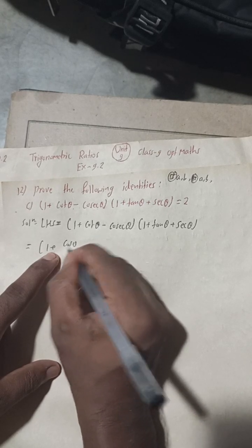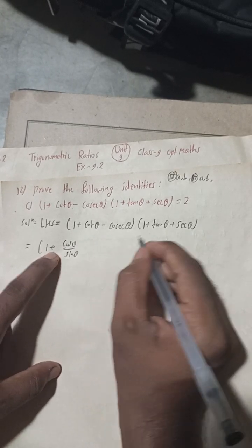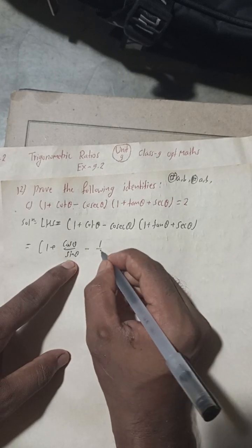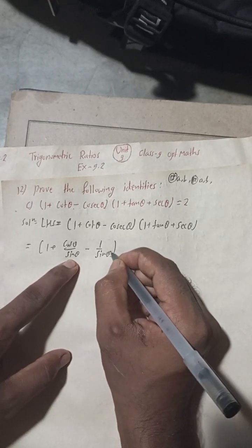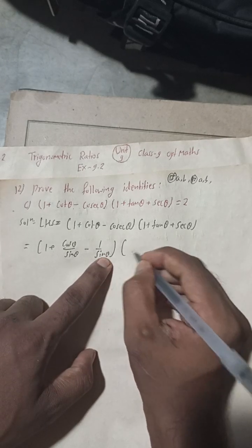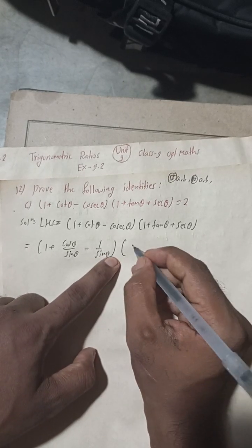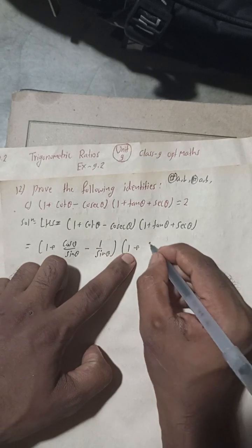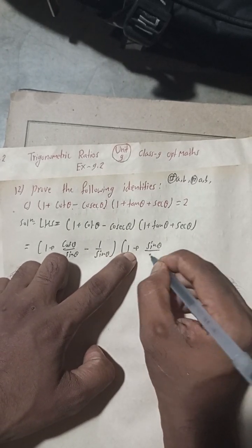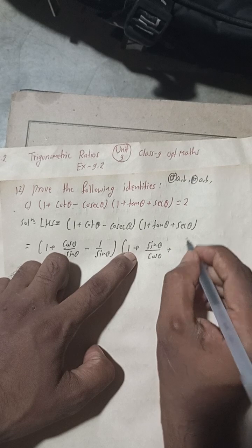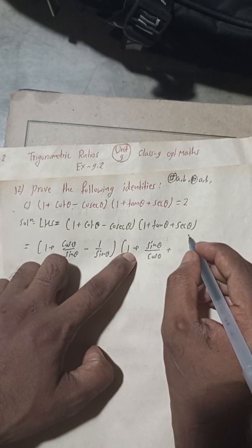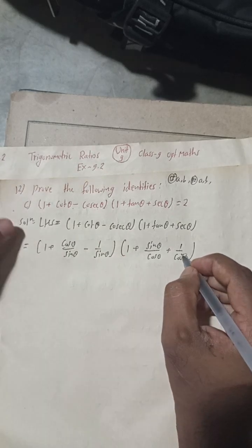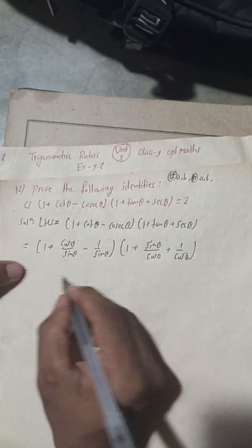Now, cot θ can be written as cos θ / sin θ, and cosec θ can be written as 1 / sin θ. And tan θ can be written as sin θ / cos θ, and sec θ can be written as 1 / cos θ.